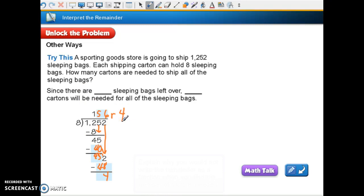Now, the question is, how many shipping carts will it take to ship that 1,252 sleeping bags? We know that we're going to have, that our quotient is 156. So we're going to have 156 boxes that are each filled with 8 sleeping bags. What are we going to do with that 4 left over? Are we going to leave them behind and not send them 1,252 sleeping bags? Or are we going to pack those in another box, it just won't be full, and send them? Yes, we are. Because they ordered that many, we need to ship them that many. Since there are 4 sleeping bags left over, you will need 157 cartons so that you can ship all the sleeping bags.